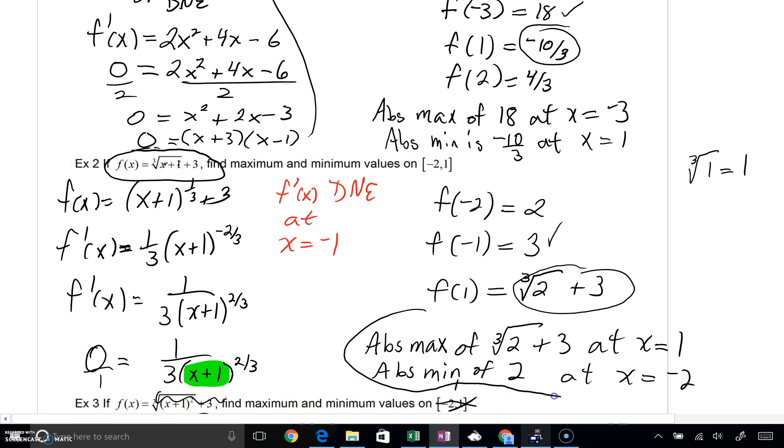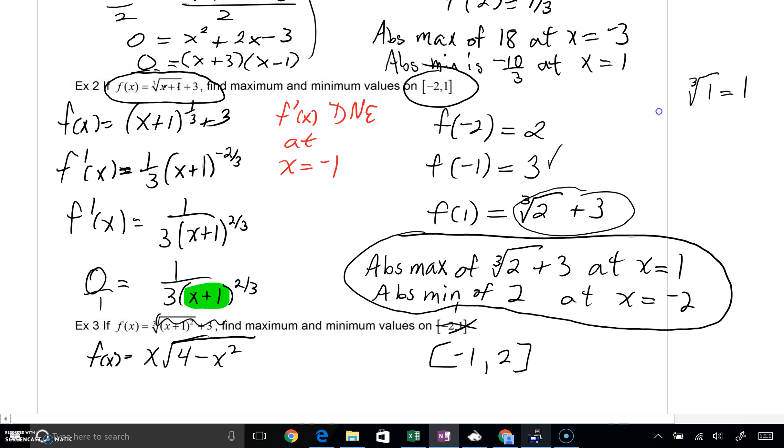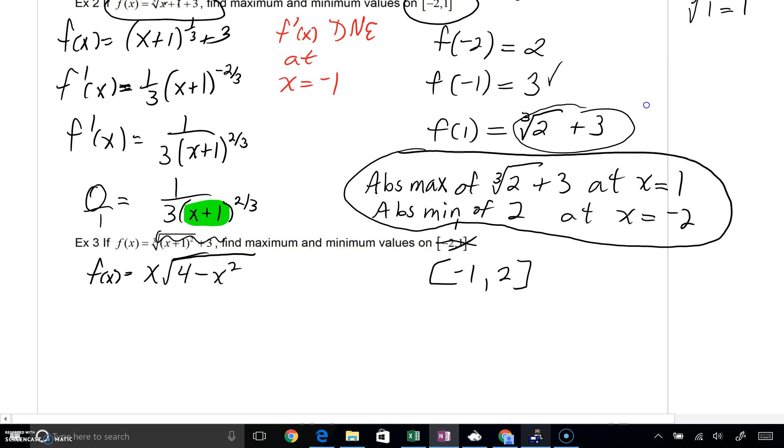So you can see we can get our extreme values, absolute maximum y value, absolute minimum y value, very quickly. Again, it's a common theme. Find out where your derivative is 0 or where your derivative is undefined. Those values are critical numbers. We need to make sure our critical numbers fit in our boundary in the interval that we're given. If they don't, we throw them out. But then we check our endpoints. We check our critical numbers in the function. The biggest y value that you'll see is your absolute maximum y value. The smallest is your absolute min.